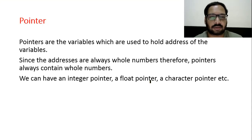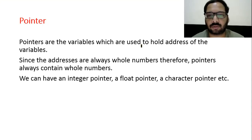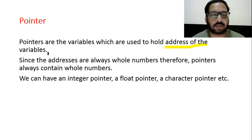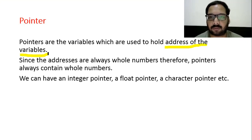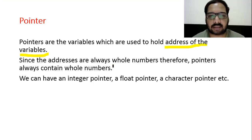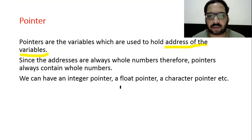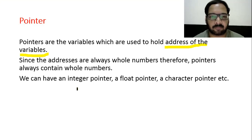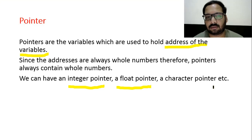Pointer: pointers are variables used to hold the address of another variable. If you want to store the address of any variable, you use a pointer. Since addresses are always whole numbers, pointers always contain whole numbers. We can have an integer pointer, a float pointer, a character pointer — whatever the type of variable, you can create that type of pointer.